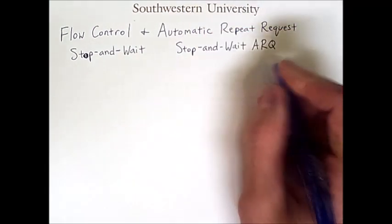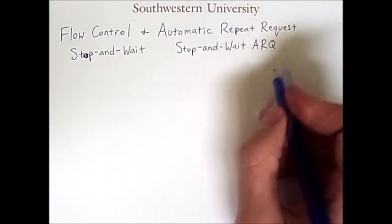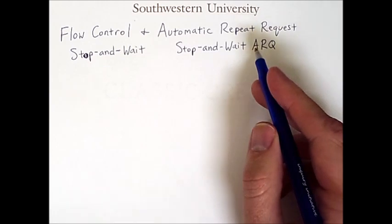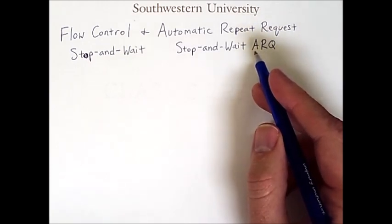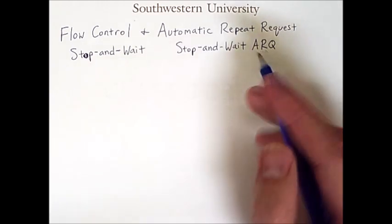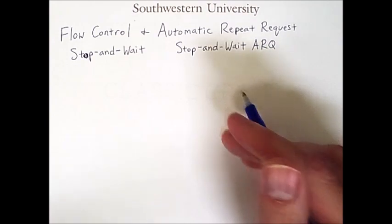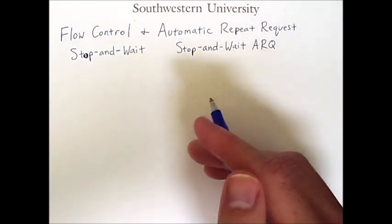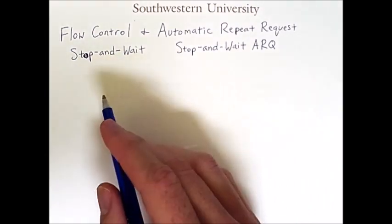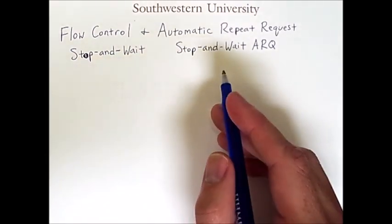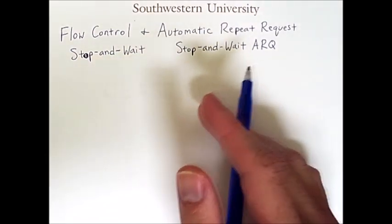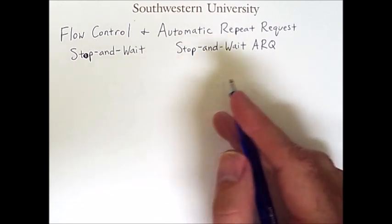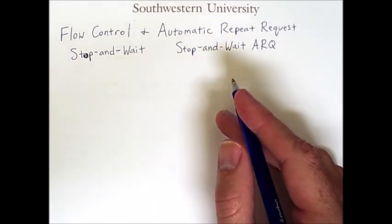An automatic repeat request is a way of managing errors and retransmission of data to assure that the information being sent by the source reaches the destination and is not garbled, is not lost, and does not overwrite data in the buffers.